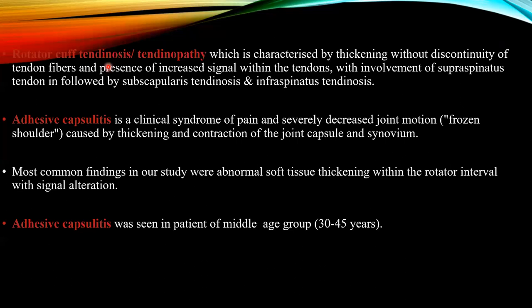Rotator cuff tendinosis or tendinopathy is characterized by thickening without discontinuity of tendon fibers, with increased signal within the tendon, involving the supraspinatus tendon most commonly, followed by subscapularis and infraspinatus tendinosis. Adhesive capsulitis is a clinical syndrome of pain and severely decreased motion, known as frozen shoulder, caused by thickening and contraction of the joint capsule and synovium. The most common MRI finding was abnormal soft tissue thickening within the rotator interval with signal alteration. Adhesive capsulitis was seen in patients in the middle age group between 30 to 45 years.